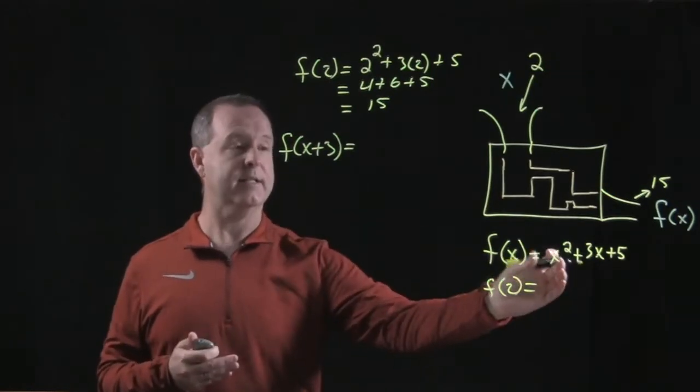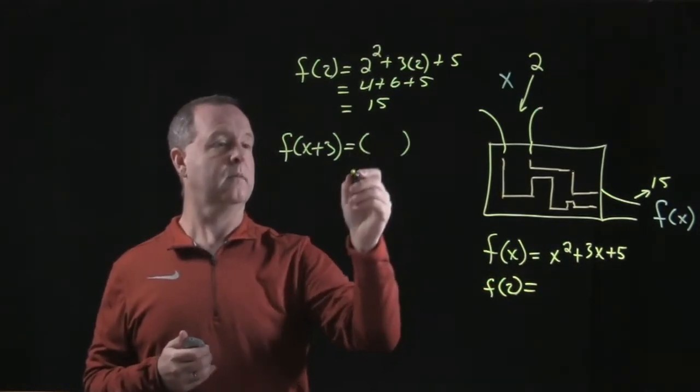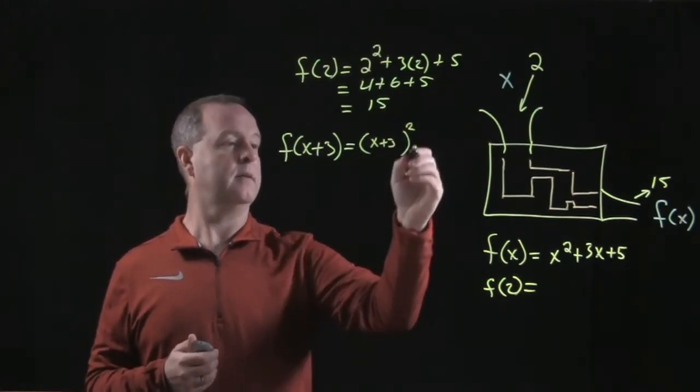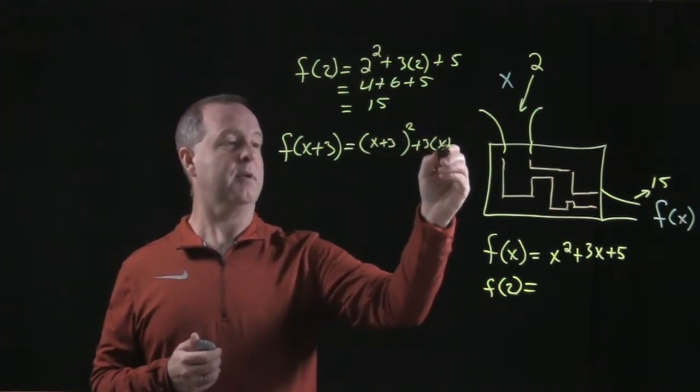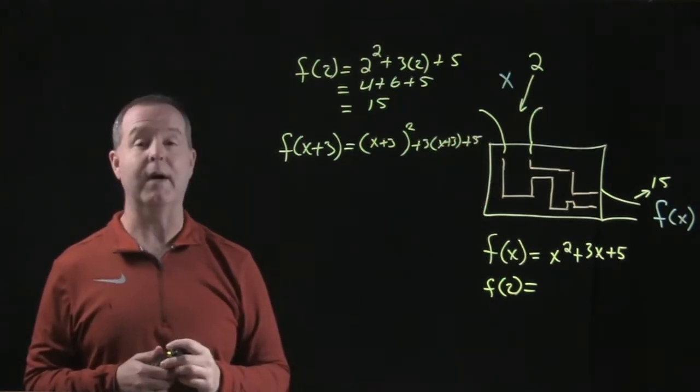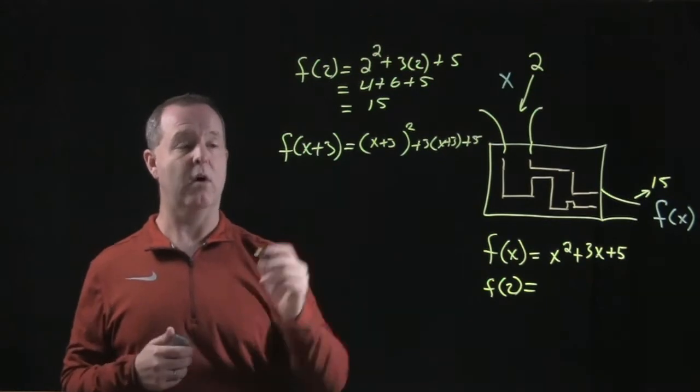So everywhere there's an x, we're going to put in x plus 3. So it's going to be x plus 3 squared, plus 3 times x plus 3, plus 5. Sorry, I got a little cramped right there. What does that solve out to be?